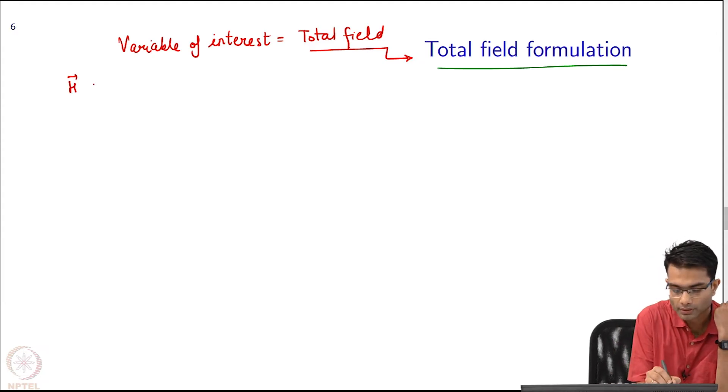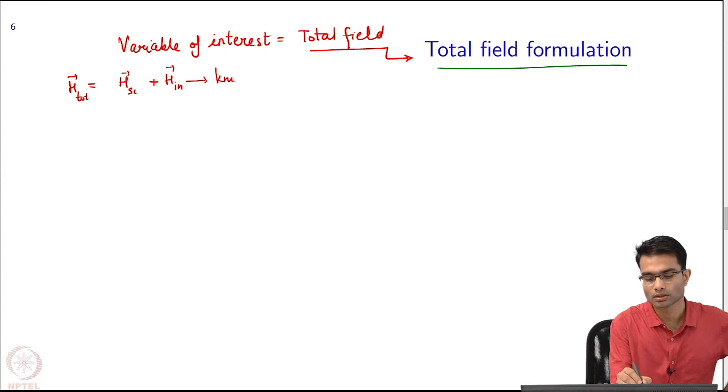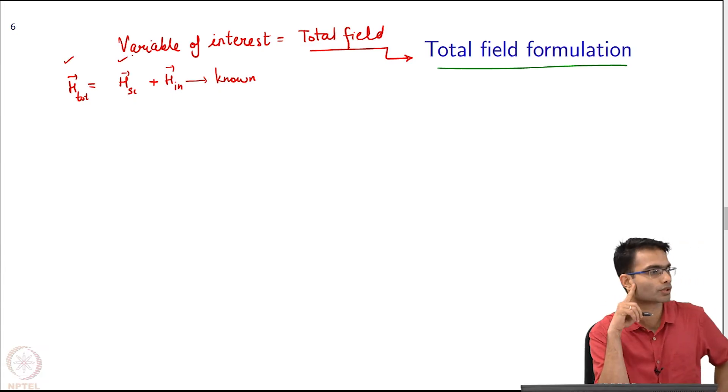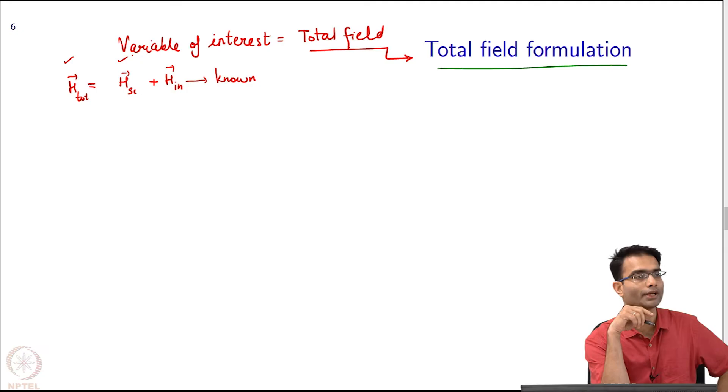So your h over here can be written as h total as h scattered plus h incident. In scattering problems h incident is known. You could choose to have your variables be either the total field or the scattered, it is your choice. The first and the most intuitive choice is allow the total field to be the variable.